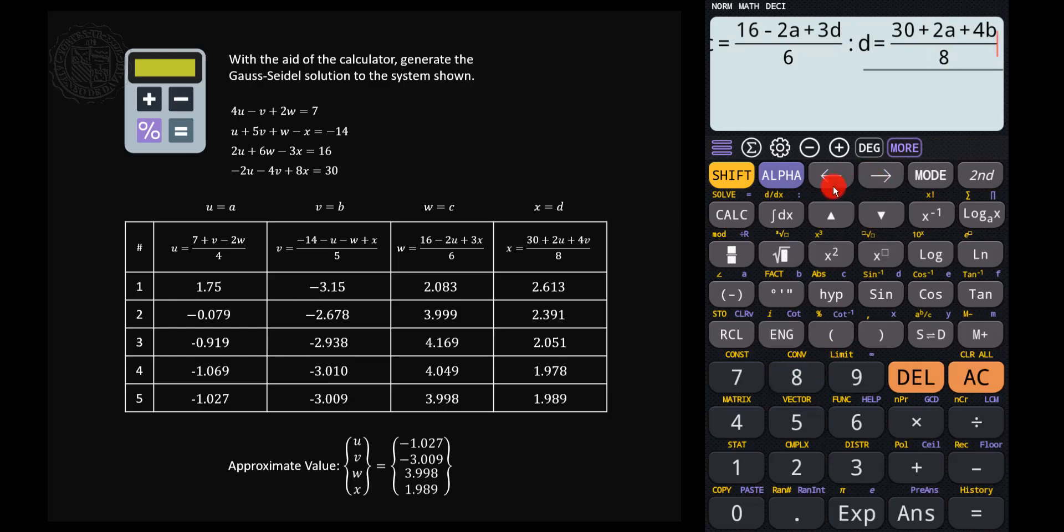And then once we input the equations, we can now press the calc key to suggest to the calculator the initial values of a, b, c, and d. Again, if we have an iteration method, it is advisable to set all values initially to 0. So let's press calc, then the calculator will ask you the initial value of b, so let's press 0, then equals, then it will ask for the initial value of c, so let's press again 0, equals, and for a, 0, and then for d, 0. Then let's just press equal.